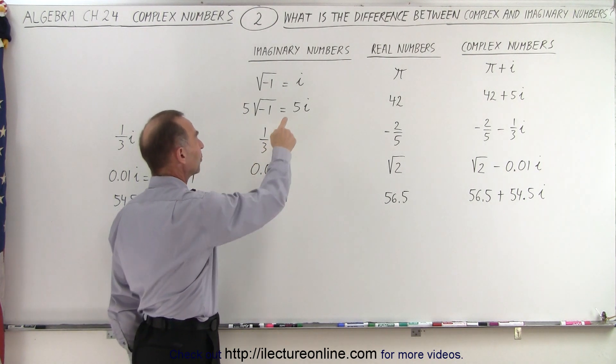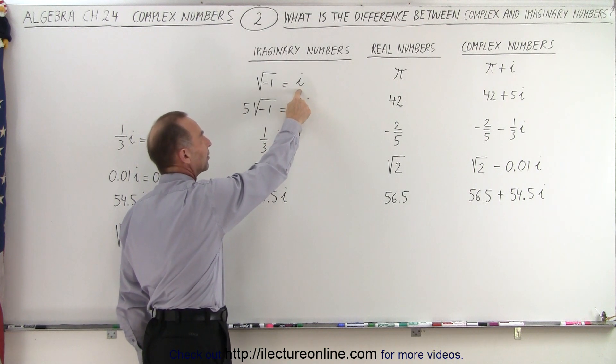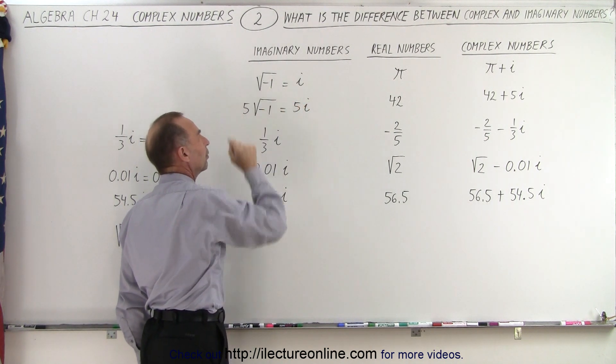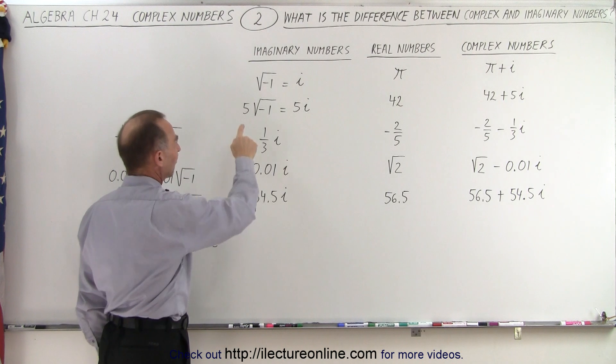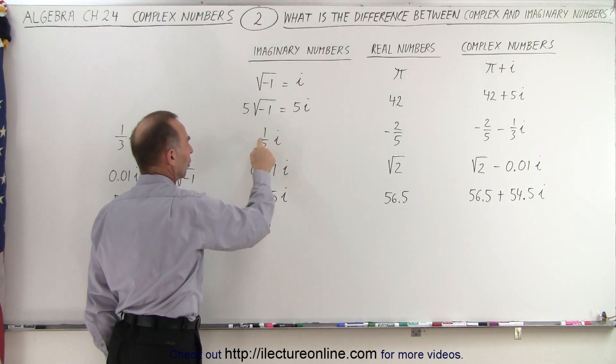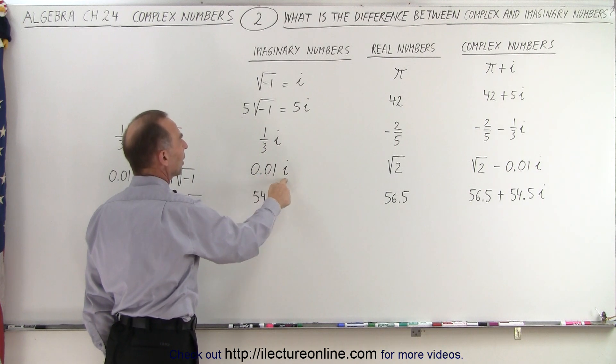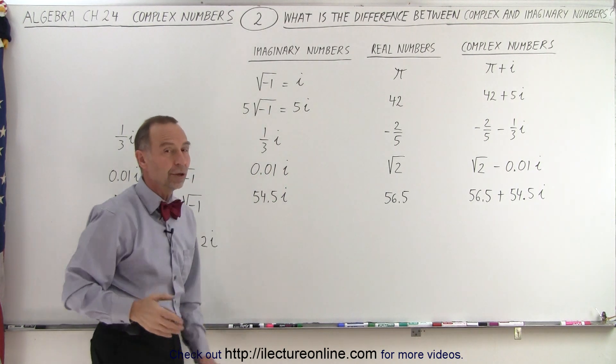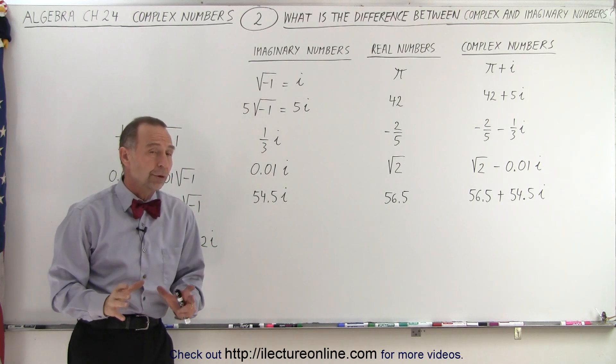Imaginary numbers always have something to do with the letter i. i, by definition, is equal to the square root of negative 1. So when we have 5 times the square root of negative 1, that's the same as saying 5 times i, or a third i, or 0.01i, or 54.5i. All those are imaginary numbers. They all involve the square root of negative 1.